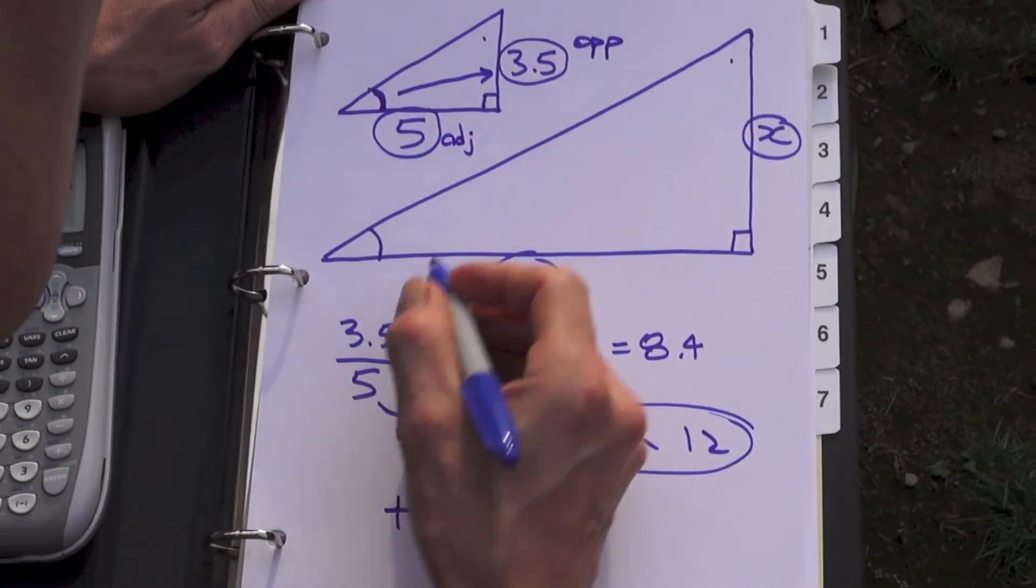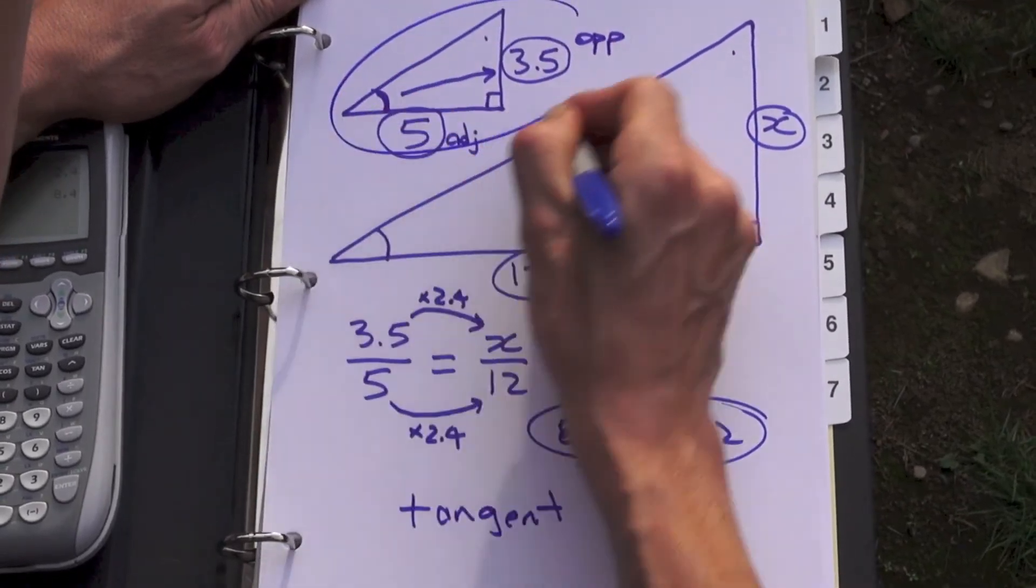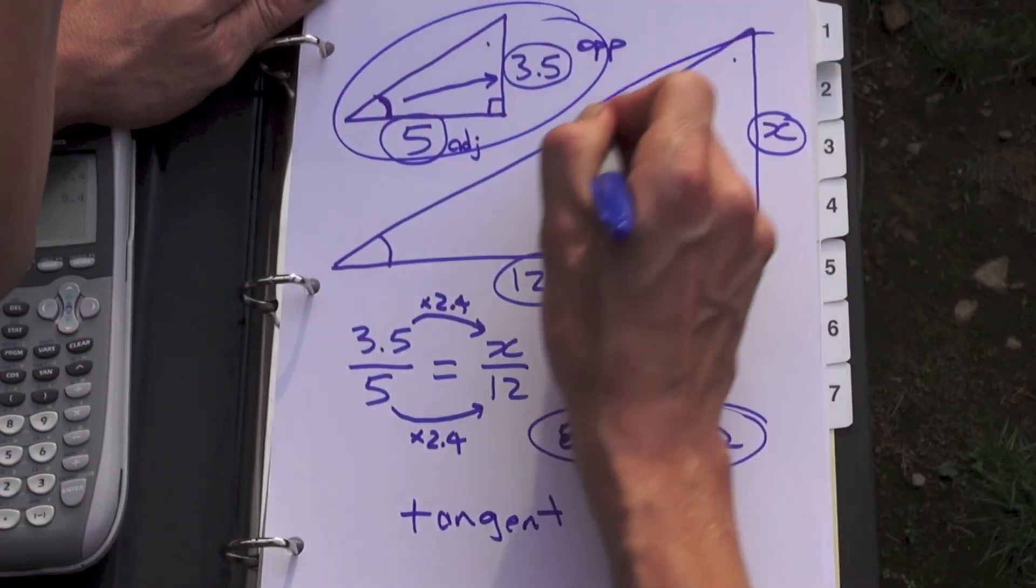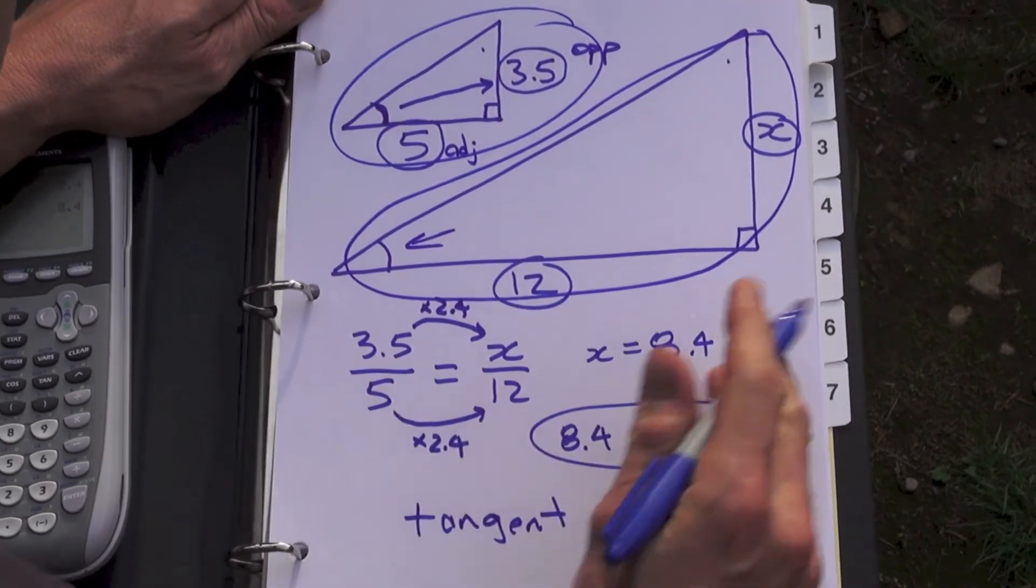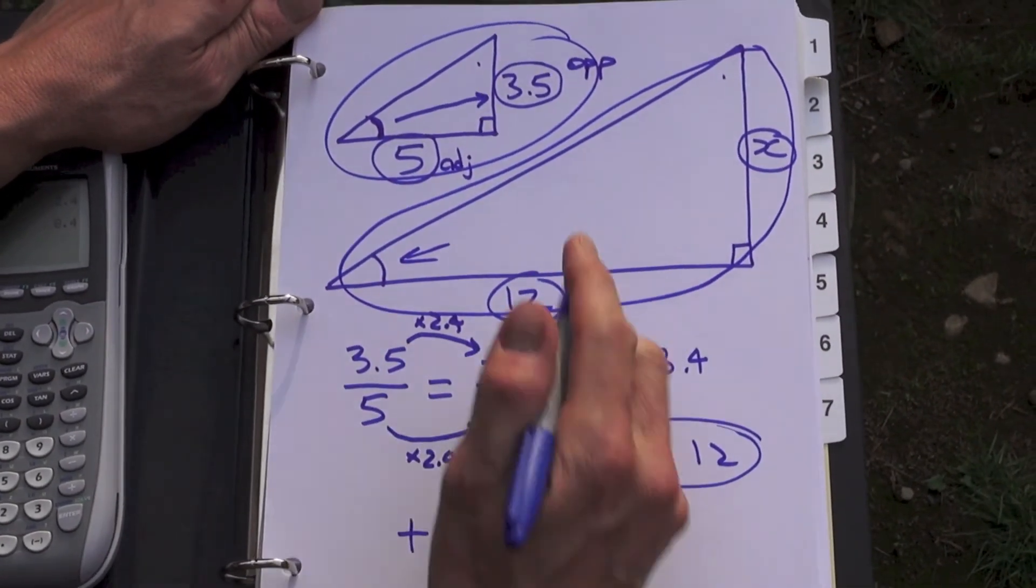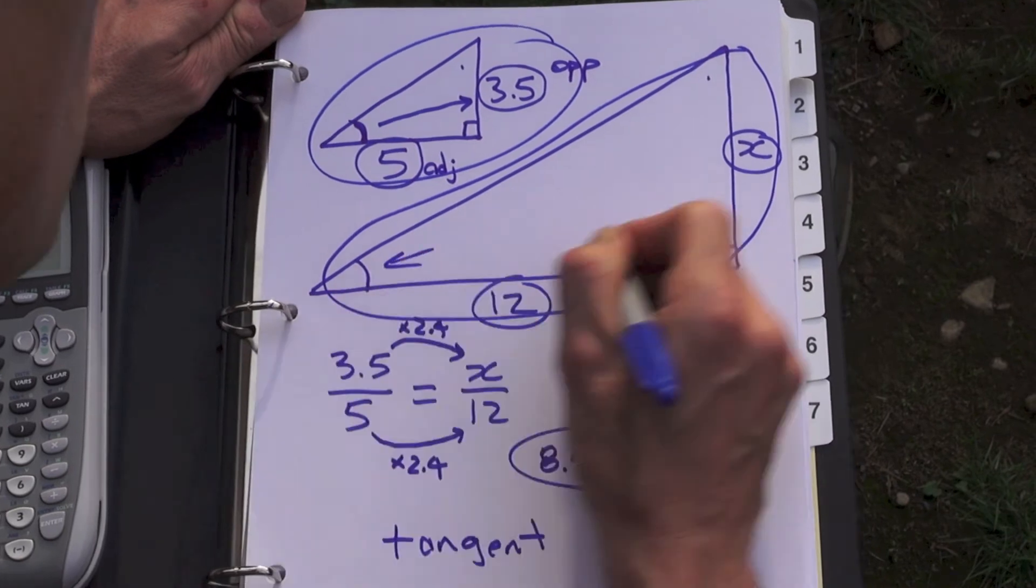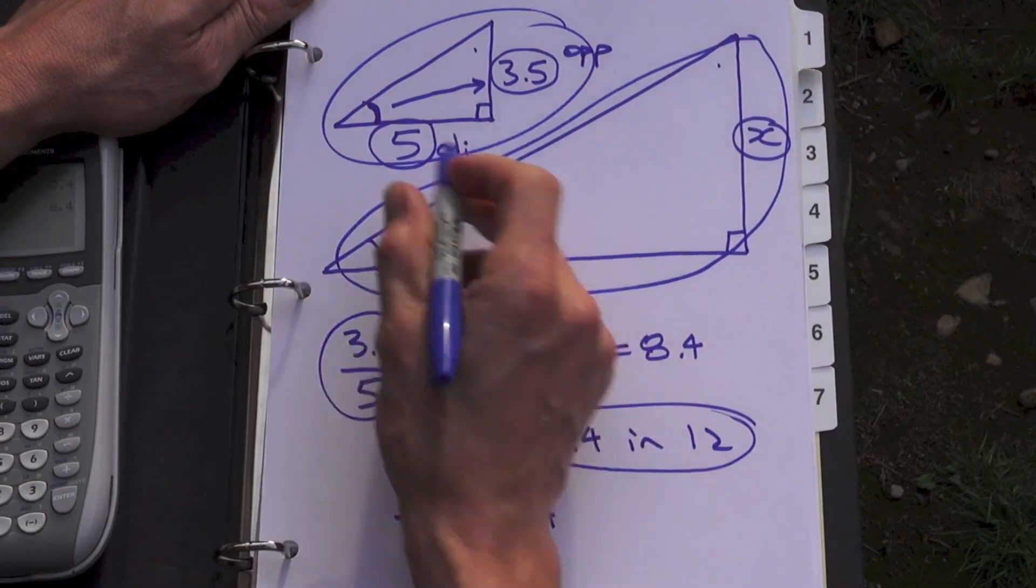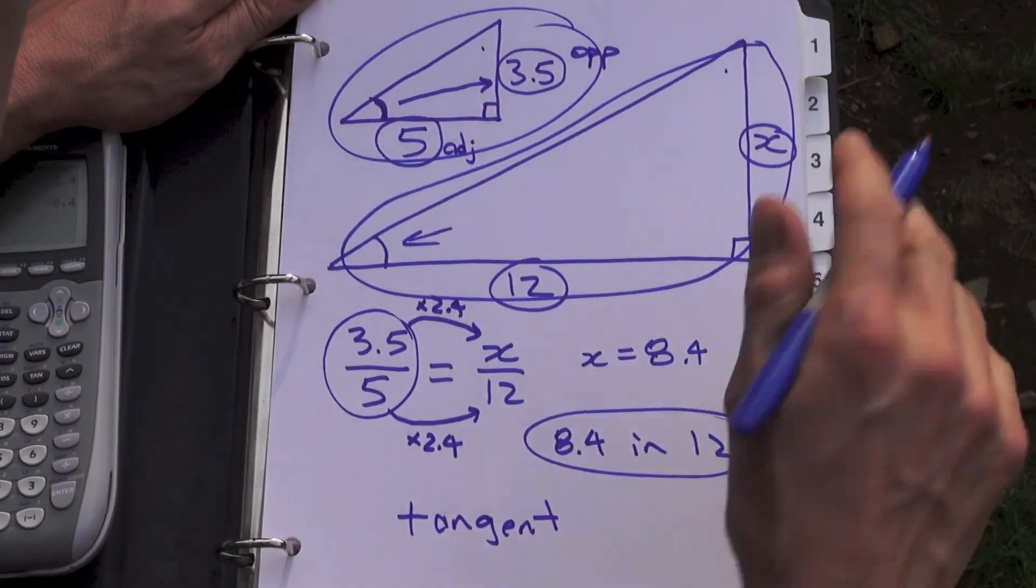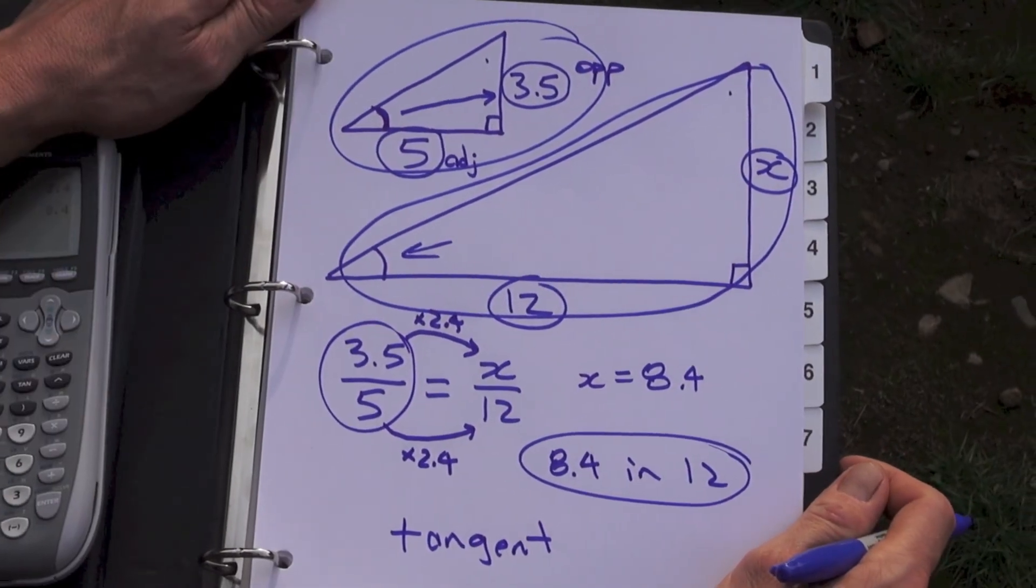And what we've looked at here is the tangent of this triangle has to be the same as the tangent of this triangle because those angles are the same. That's why trigonometry works. If you know an angle you know the ratio. So if we divided this ratio that would be the tangent, the tangent ratio for those two triangles. So that's a little bit of a lead into trigonometry too.